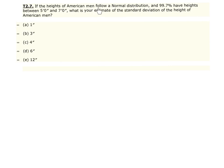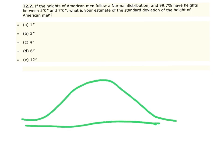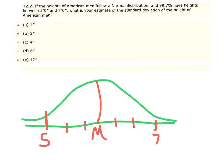Number 7: The heights of American men follow a normal distribution, and 99.7% have heights between five feet and seven feet. What is your estimate of the standard deviation? The key: 99.7% is captured within three standard deviations from the mean. Sketching the standard normal curve, five feet is at negative three standard deviations and seven feet is at positive three standard deviations. The middle between five and seven is six feet, so the mean is six feet.